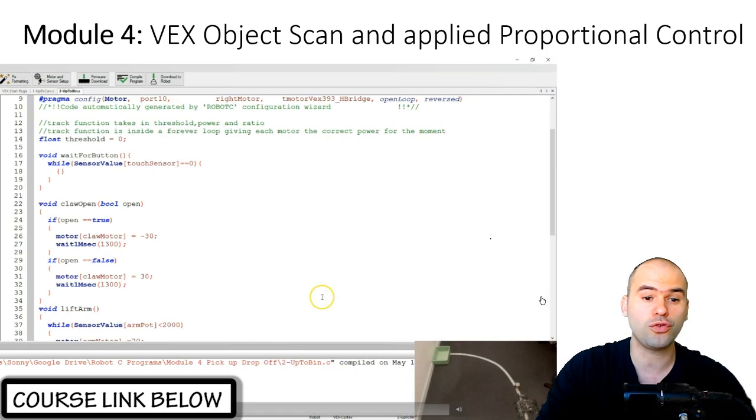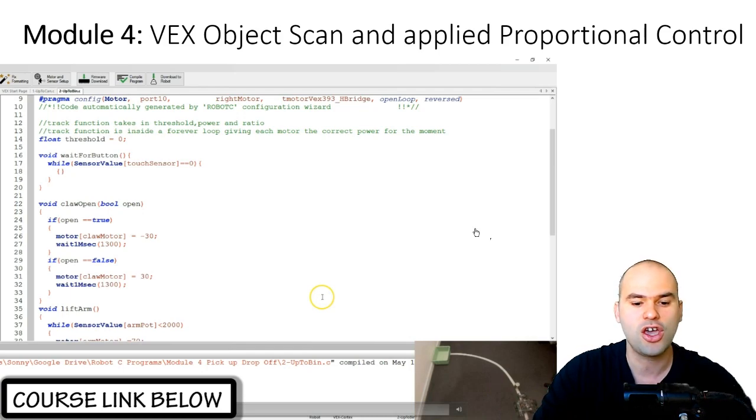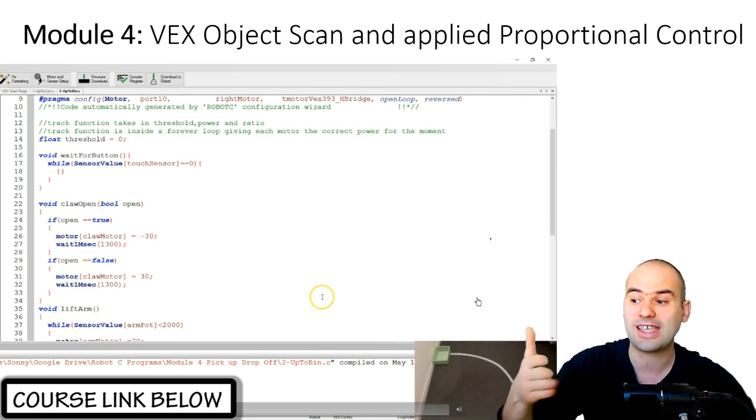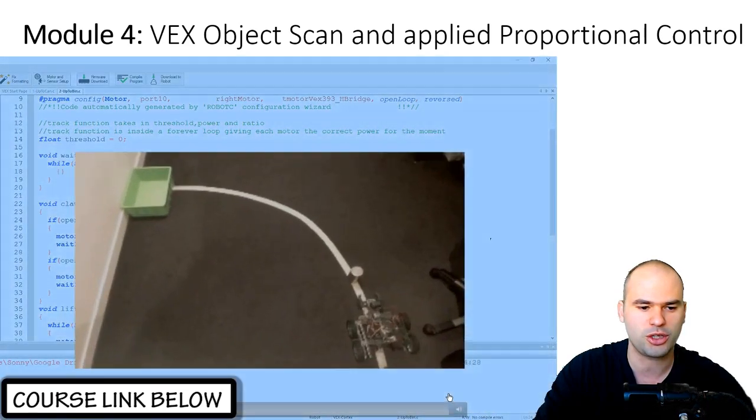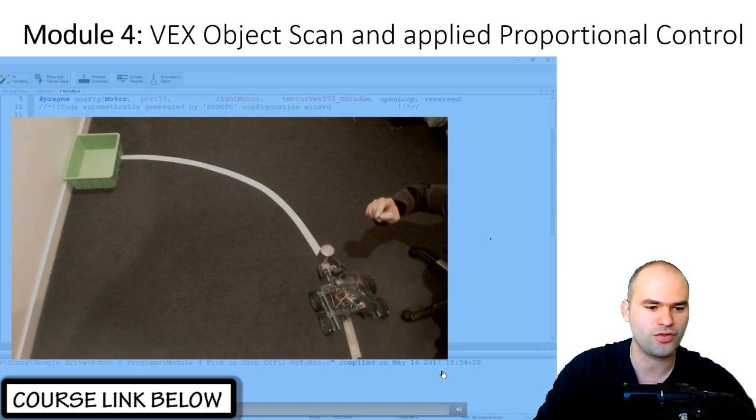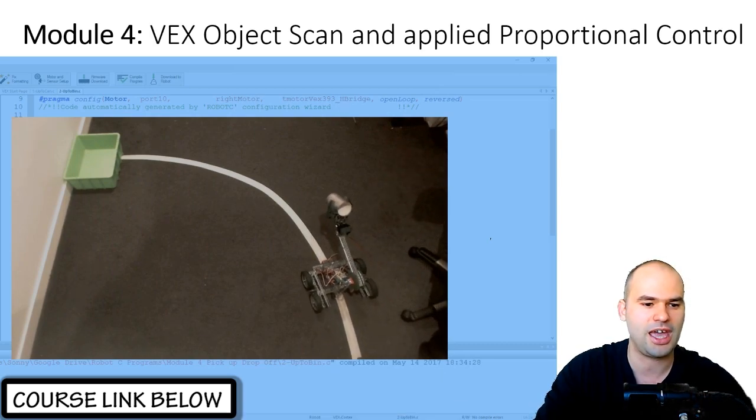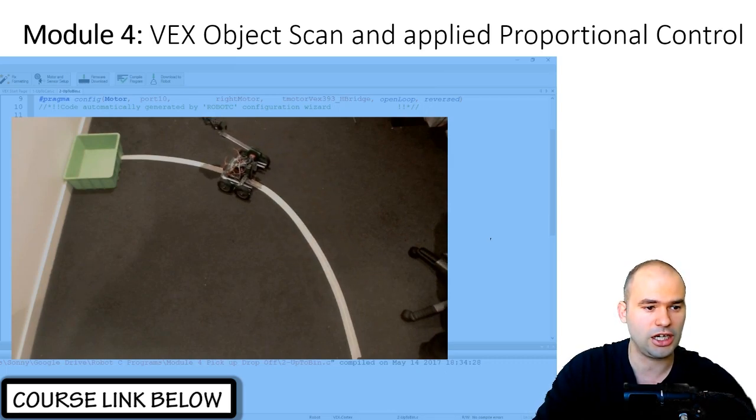In module four we're going to put everything we learned together and we're going to do two activities. One is proportional line following that's going to have our robot follow lines of any shape or dimensions, and the other is scanning and picking up objects. I think right here is an example of that proportional line following with some object pickup along the way. Robot gets activated by the push of a button, finds a can, picks up a can, and dunks it into the bin. Slam dunk.